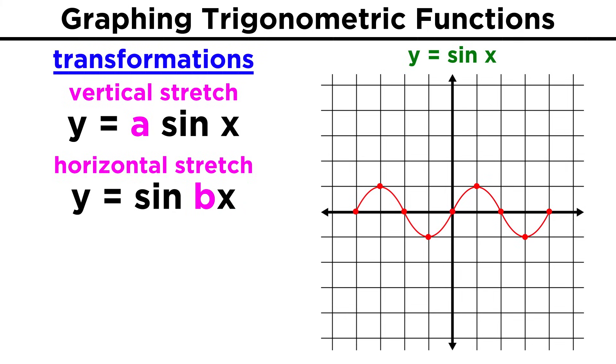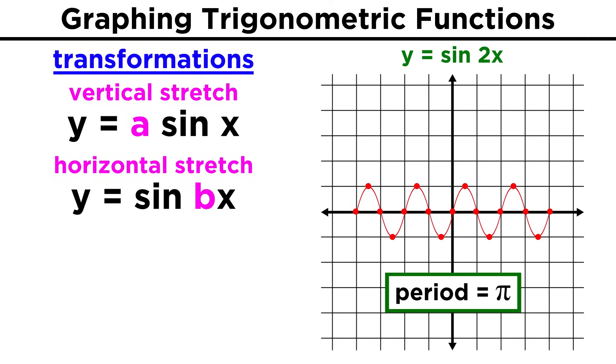If instead, there is a coefficient operating on x, that would be a horizontal stretch, as y equals sine of two x would mean that the function will rise and fall at twice the normal rate. This would mean that the period of this function is pi instead of two pi.